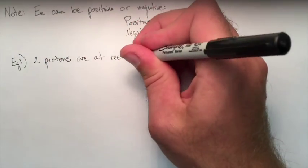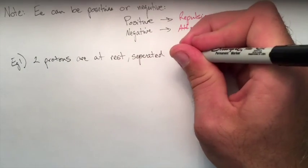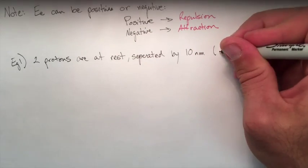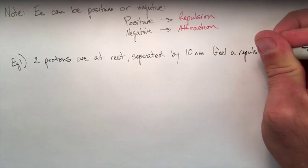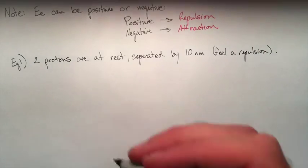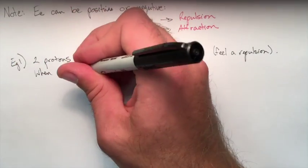Negative means attraction. Let's do one example. Two protons are held near each other at rest, separated by 10 nanometers. We know the protons are going to feel a repulsion.